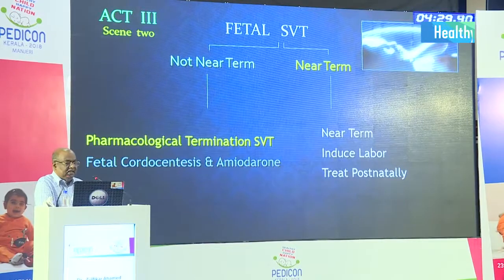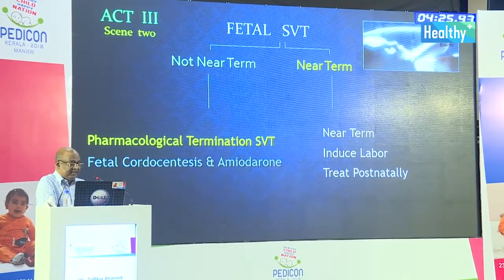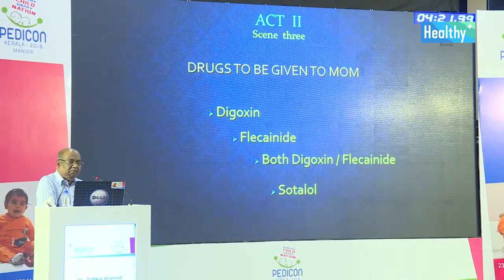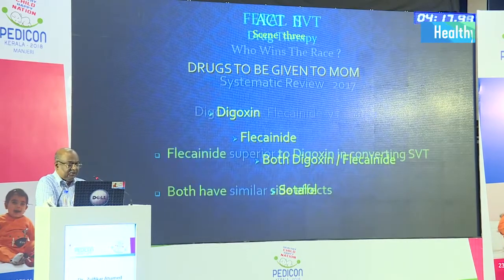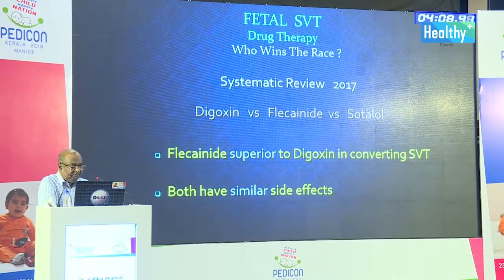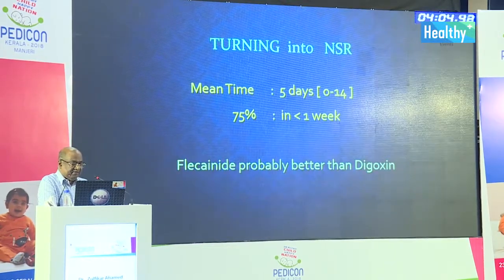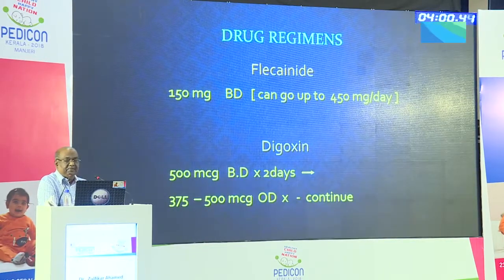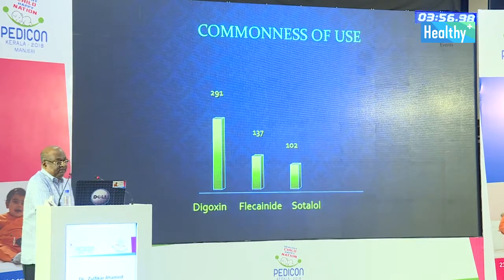Act Four: fetal SVT in a primigravida, confirmed by echocardiography — both Doppler and M-mode. If near term (35 weeks and above), the easiest approach is to induce labor and manage postnatally. For earlier gestations, transplacental pharmacological termination is used. Common drugs: digoxin, flecainide, or a combination; rarely sotalol. A major 2017 review showed flecainide is superior to digoxin. Oral flecainide is now available; however, digoxin remains popular globally and takes 3–5 days to work.